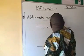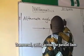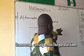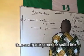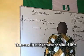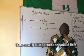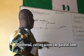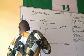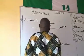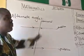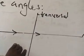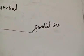All this line — transversal. The parallel line. Cutting across the parallel line is a transversal. This one is a parallel line, parallel line.